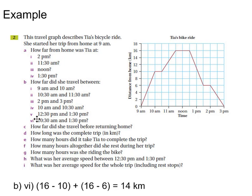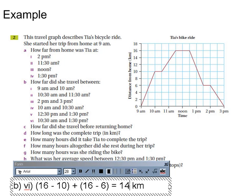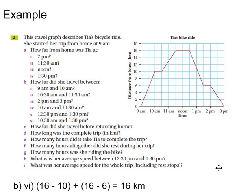And the last one, B vi, which is the sixth one. This one's a little bit different - we actually have to divide it up into smaller parts, so it makes it easier that way. At 10:30am she travels all the way up here, so 16 minus 10 is 6. And then in the second part of it, 16 all the way down to 6, so 16 minus 6. So overall she actually travels 16km.